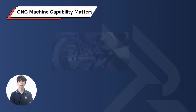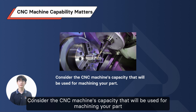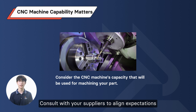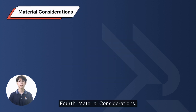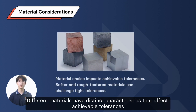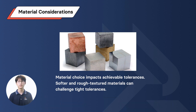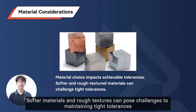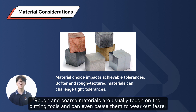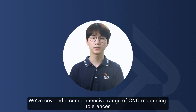Third, CNC machine capability matters. Consider the CNC machine's capability that will be used for machining your part, and consult with your suppliers to align expectations. Fourth, material considerations. Different materials have distinct properties that affect achievable tolerances. Softer materials and rough textures can pose challenges to maintaining tighter tolerances, and coarse materials are tough on cutting tools, causing them to wear out faster.